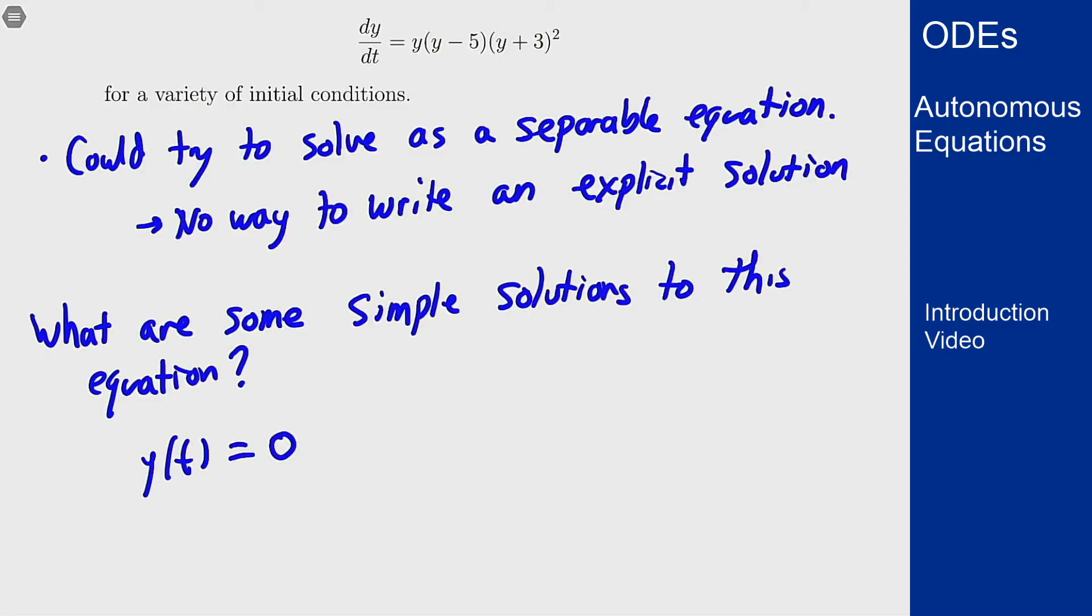Well if I plug that into the right hand side over here I will get that my slope should be 0 because this term vanishes. So for this setup y prime is just 0 it's a constant function but this is the same thing as 0 times 0 minus 5 times 0 plus 3 squared so it solves the equation.